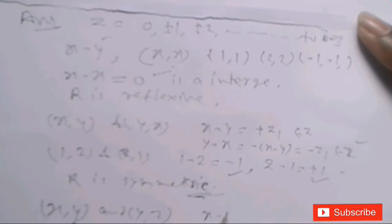Transitive भी हो जाएगा। X and Y, और Y and Z लिया जाए — Y common रहेगा। X minus Y = Z1 integer है, और Y minus Z = Z2 integer है। तो X minus Z = Z1 + Z2, sum of two integers is also an integer, belong to Z. इस तरह से X,Z भी present है।